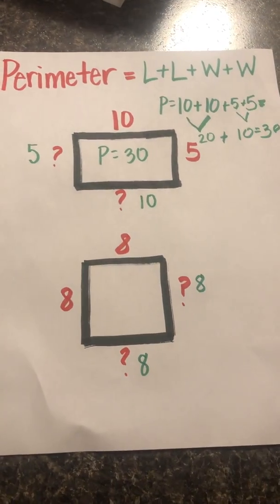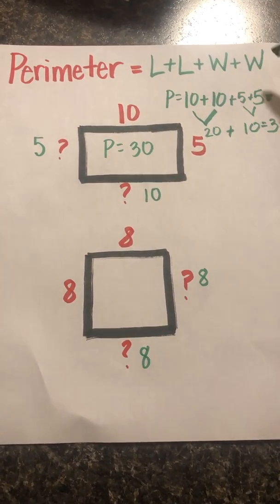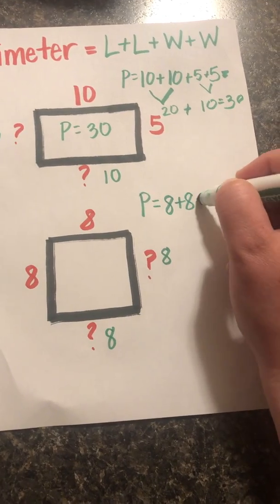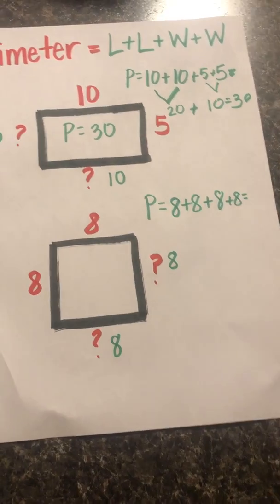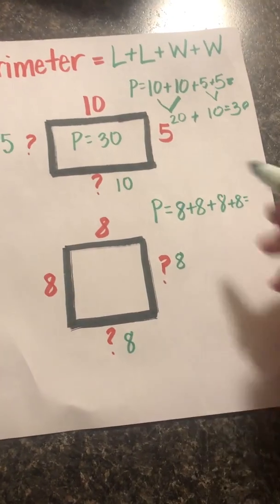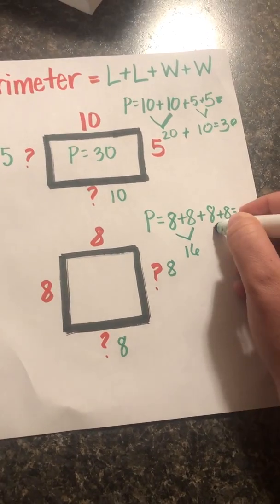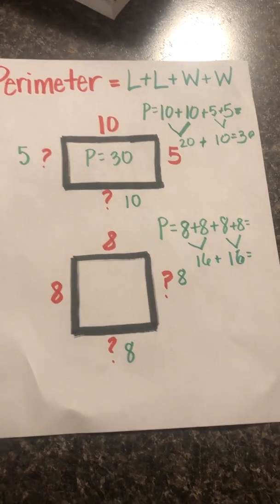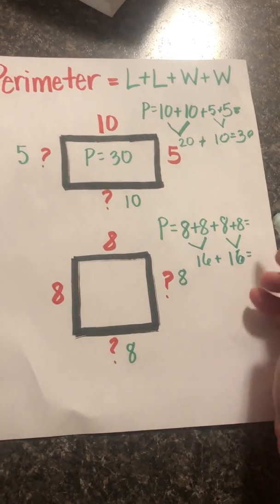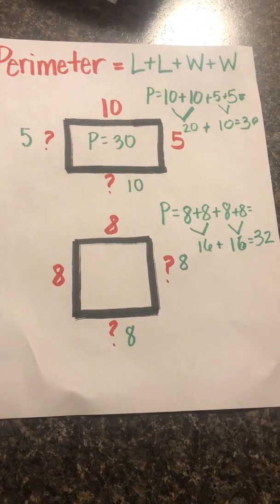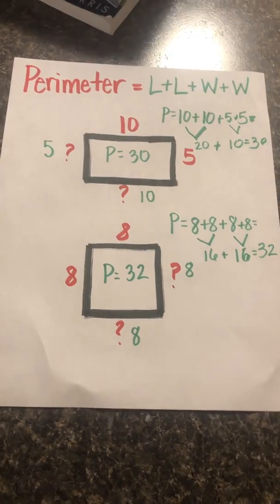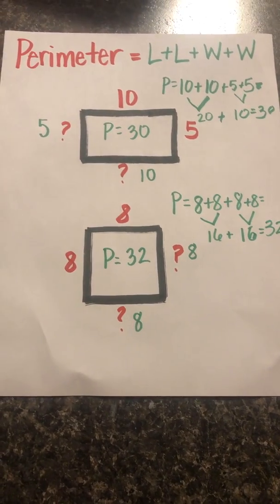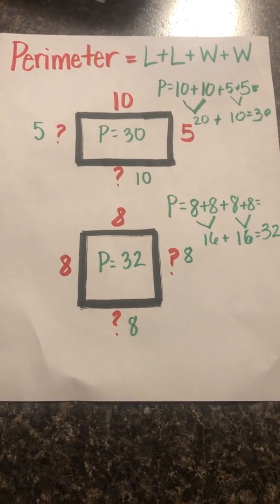To find the perimeter we must have the lengths and the widths. Remember, perimeter equals length plus length plus width plus width. So the lengths and widths would be eight plus eight plus eight plus eight. What is eight plus eight? That would be sixteen. And eight plus eight is sixteen again. Then sixteen plus sixteen is thirty-two. So the perimeter of this shape is thirty-two. And that is how you find the missing side lengths of a rectangle and a square, and then find the perimeter once you have those missing side lengths.